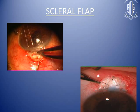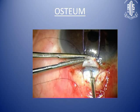Some surgeons prefer to use quadrangular flaps, some use spiral flaps, and some use triangular flaps. The ostium formation is also very variable — some use a punch, and some use normal blades or scissors.